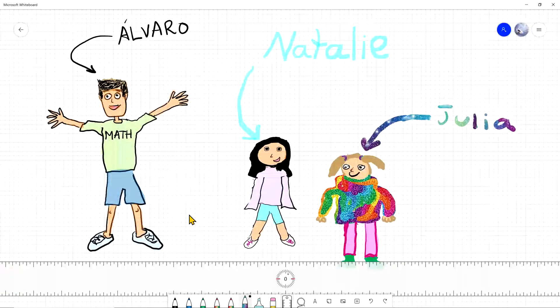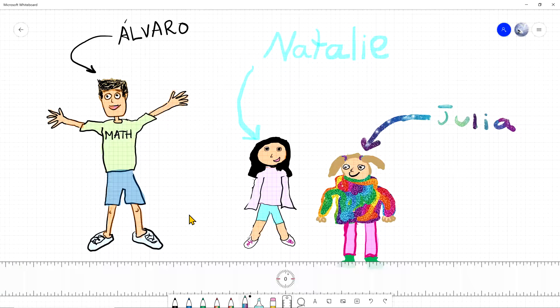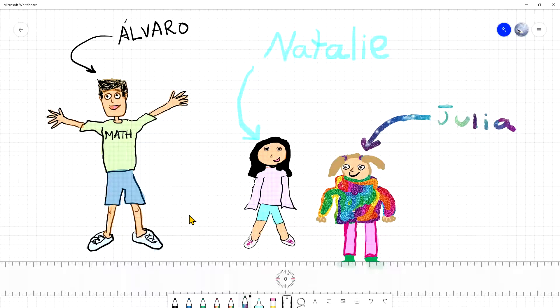So this is us, more or less. I'm Alvaro and I'm a math professor at UConn and these are my two daughters, Natalie and Julia. Hi, Natalie. Hi, I am Natalie. I'm nine years old and I love doing math with my dad.